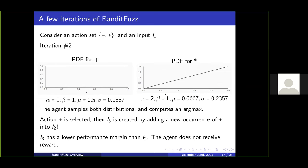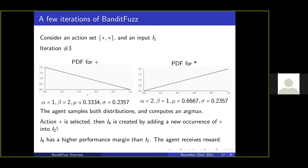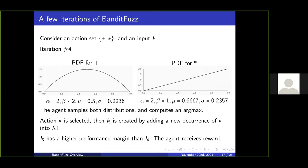Say we pick plus this time and create a new instance by adding a new occurrence of plus. If the agent doesn't receive a reward, we increment that action's beta parameter and the mean shifts and deviation goes down. If we do it again, create i4 by creating a new occurrence of plus again, and this time we get a reward, then we increment the alpha parameter. The mean is now back to a half but the deviation keeps going down.